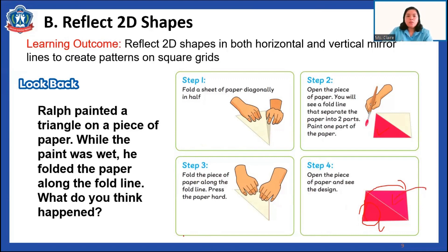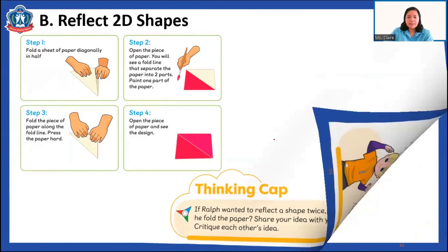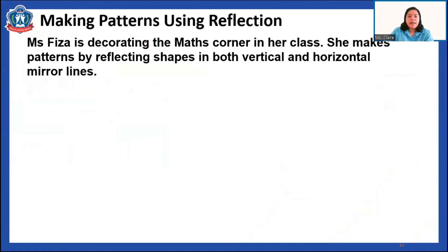The color from one side will be copied — reflected — onto the other side. If Rob wanted to reflect the same shape twice, how should he fold the paper? If you know the answer, P5, you can share that during our class. Now let's look at making patterns using reflection.